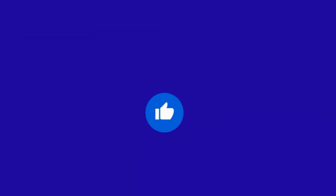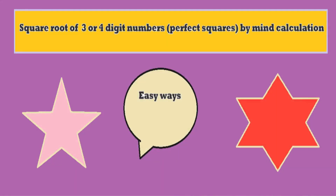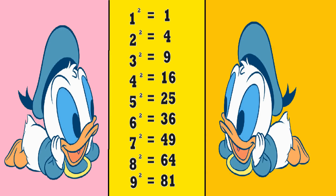Hi all, welcome again — like, share and subscribe for more videos. This time we will see how to find the square root of perfect square numbers in mental calculation. To find the square root, we have to know the squares of all single digit numbers 1 to 9. With this, we can calculate the square root of perfect square 4-digit numbers easily.